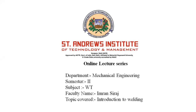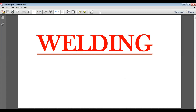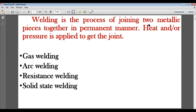Today we will have an introduction to welding, and over six to seven lectures we will cover all types and aspects of welding. Welding is the process of joining two metals or two pieces together for a permanent joint. Heat as well as pressure is applied to the joint, because this is a joint at the fusion level — at the physical level.